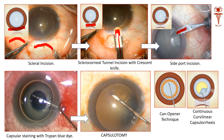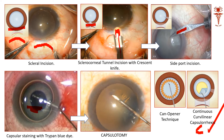Once the side port is made, I am injecting an air bubble and then trypan blue dye — can you see the blue dye? Once the trypan blue is injected, the capsule stains better. Then using a sharp 26-gauge needle, we do a capsulotomy. This can be done as a CCC — continuous curvilinear capsulorrhexis — which is the preferred technique, or as a can opener, but CCC is considered the better technique to open the anterior capsule and expose the lens contents.